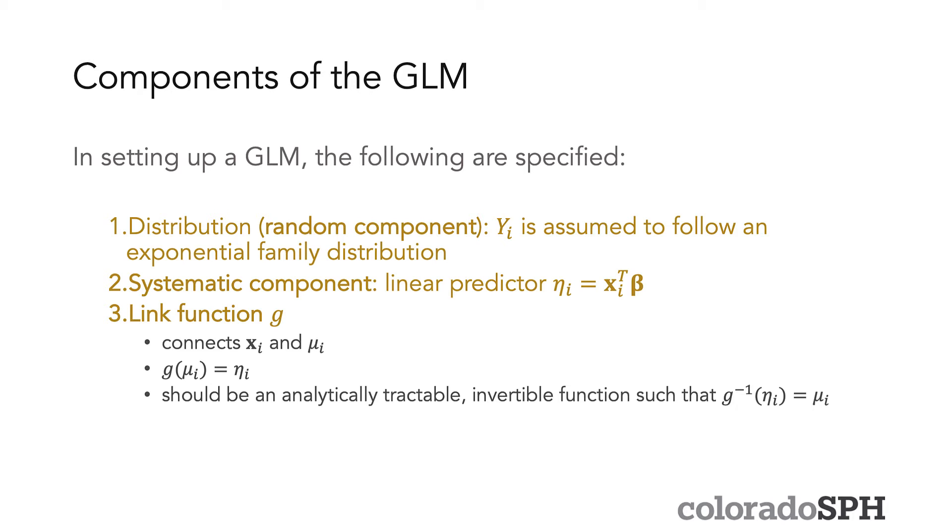So there are three main components of the GLM. And these components each need to be specified when you're setting up your generalized linear model. The first component is the distribution, which is also called the random component. And that distribution is for the Y_i values, the outcome. And the assumption, one of the assumptions of GLMs, is that Y_i has to follow an exponential family distribution. And this is why we spent so much time talking about exponential families in the last lecture. You want to be familiar with what form those distributions take.